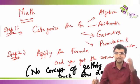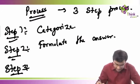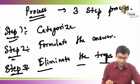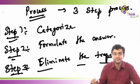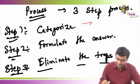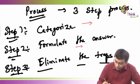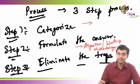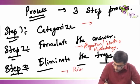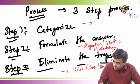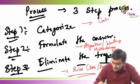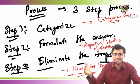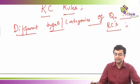In RCs, we have one additional step. You categorize, you formulate, and then — how do you eliminate the traps? This is a three step process: categorize, formulate the answer, and eliminate the traps. For every category I am going to give you an algorithm or a working methodology to answer the question. To eliminate the traps, we will use the rules — the rules are basically the do's and don'ts. I will also teach you the categorization process, because to categorize you need to know the different categories of questions in English RCs.